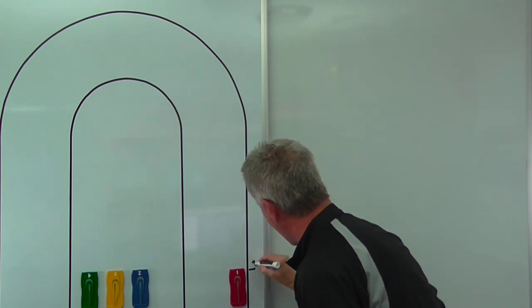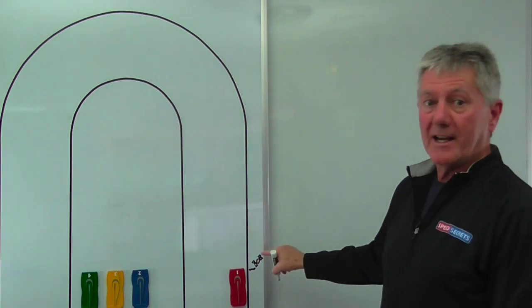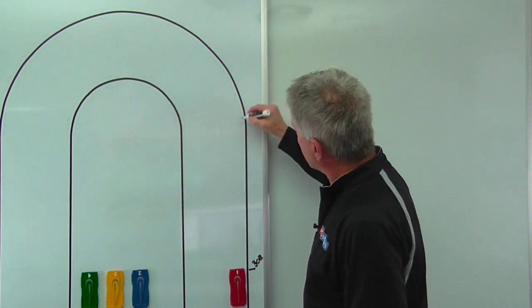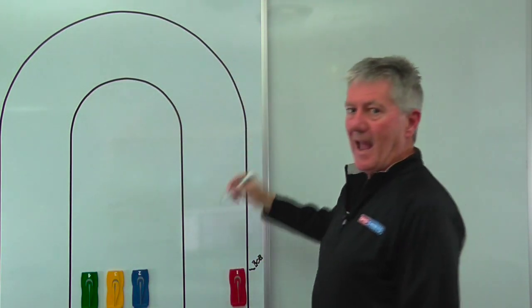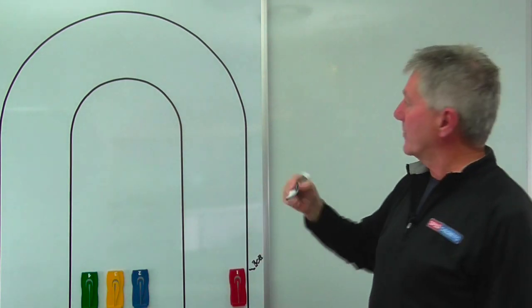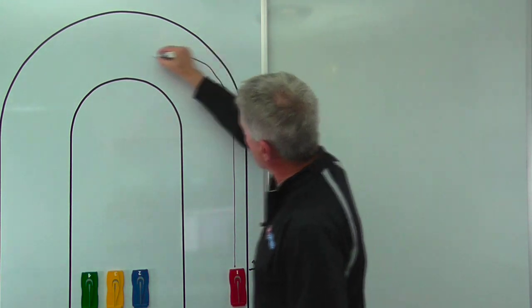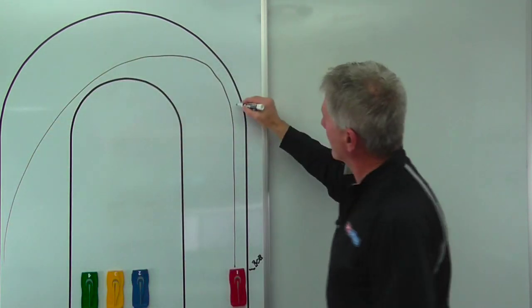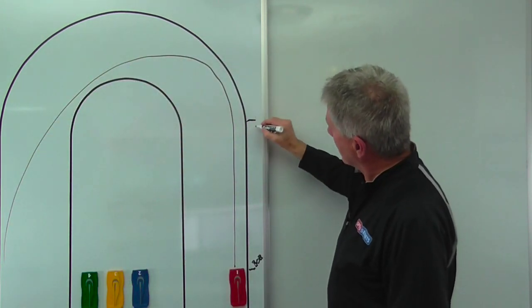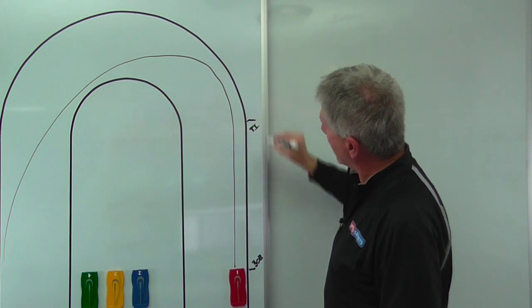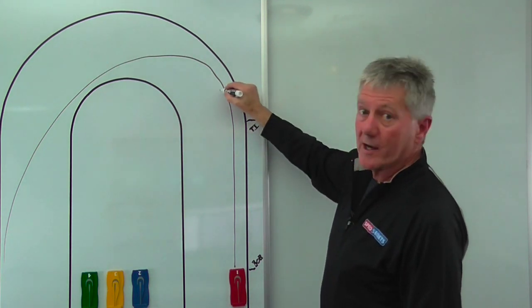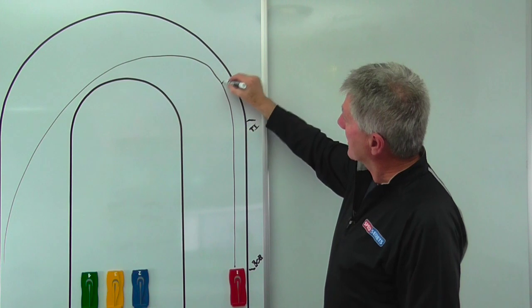So here's the begin of braking, and somewhere down here is where you end braking - that point where your foot comes off the brake pedal. Let's say you're on this line and you're going to drive a line something like that. Your turning point might be right there, but your end of braking point might be somewhere in here.